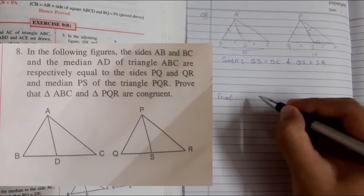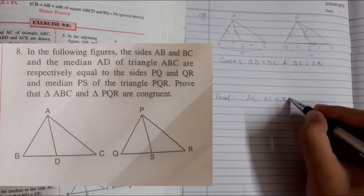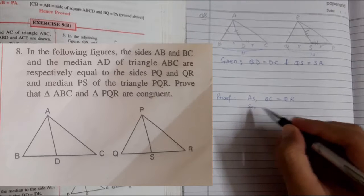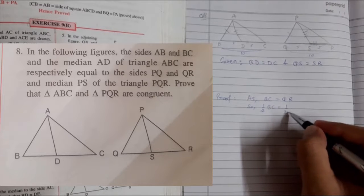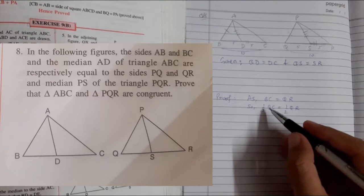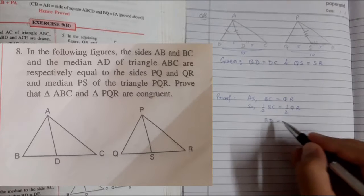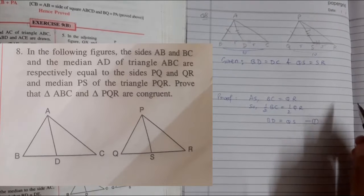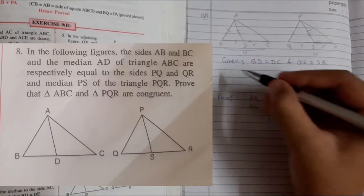Since BC equals QR, half of BC equals half of QR. Taking BD equals QS, we can use this information. Now, what we need to prove...